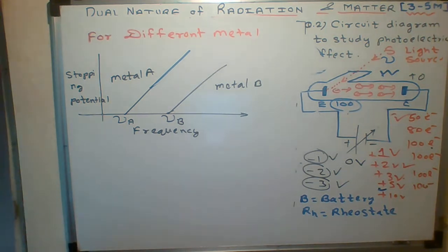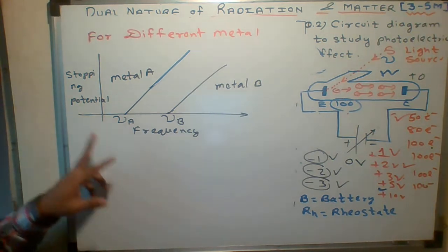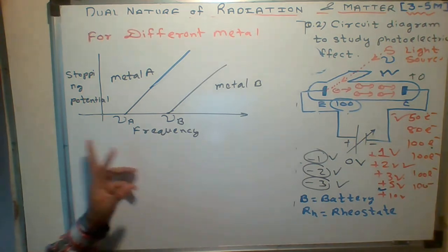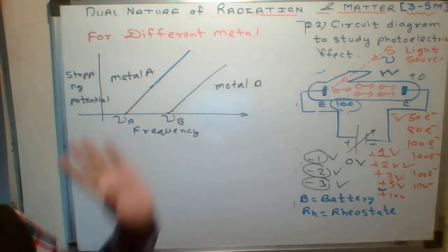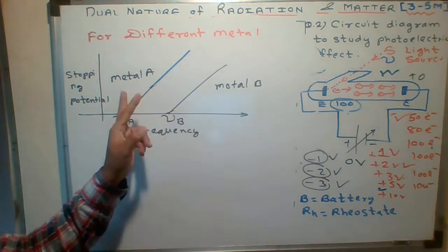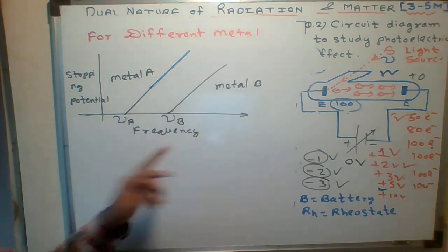What is the main motto of this particular graph? Stopping potential versus frequency. As frequency increases, stopping potential also increases. For different metals, threshold frequencies are different.